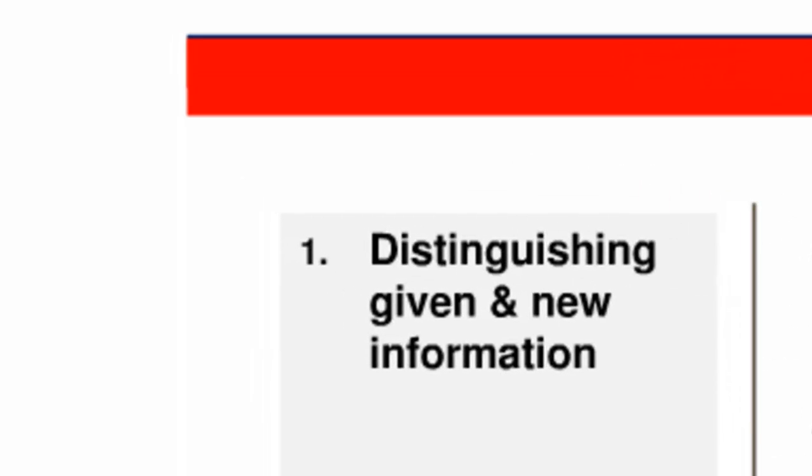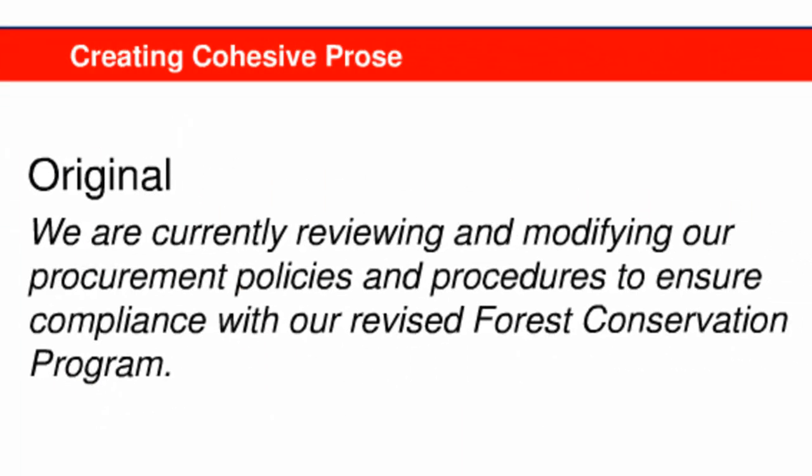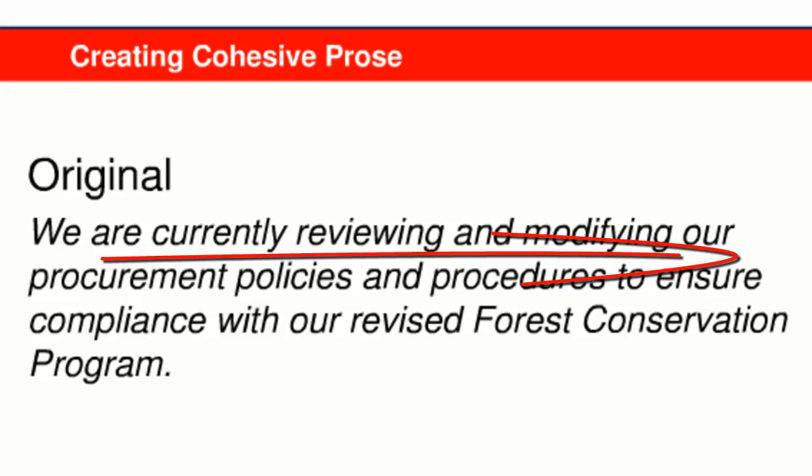The first aspect of cohesion you need to understand is how to distinguish between given and new information. Look at this sentence from the letter to suppliers. In general, readers of English assume that the predicate slot — basically that means from the first verb form to the end of the sentence — contains information that's unknown, not at the surface of the reader's consciousness, hence called new information. So in this sentence, 'are currently reviewing' is the new information.